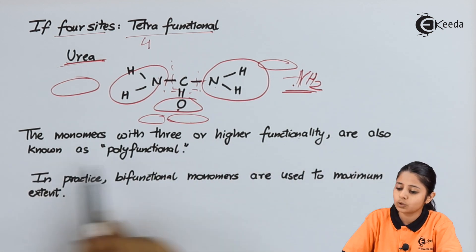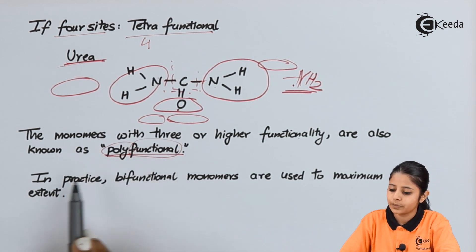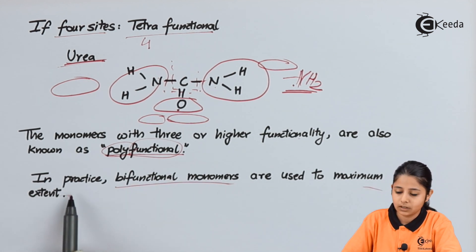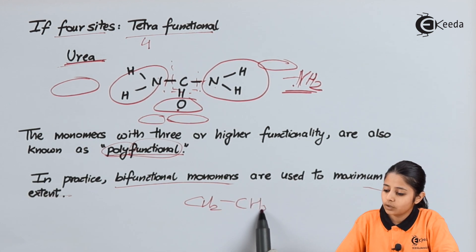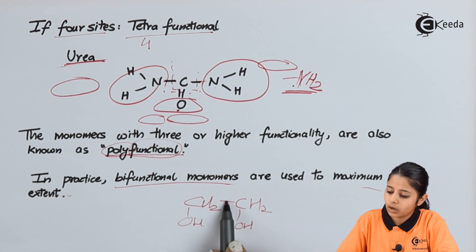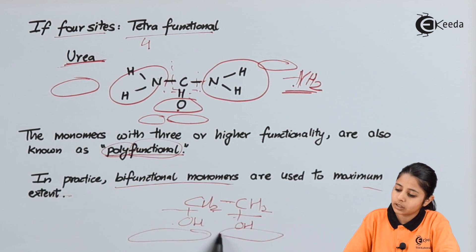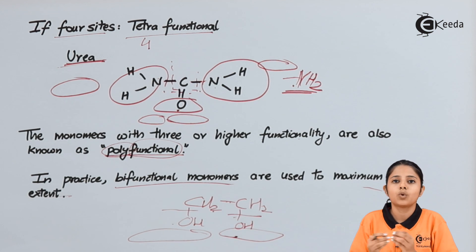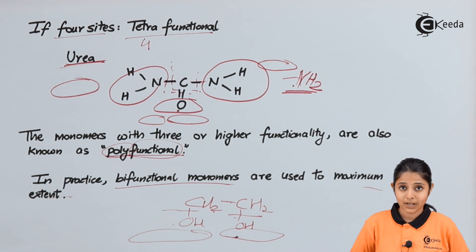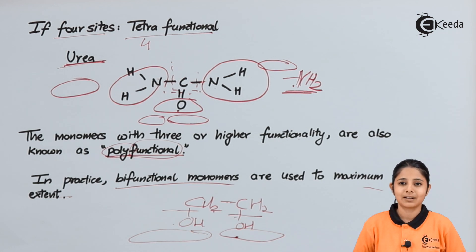Monomers with three or higher functionality are also known as polyfunctional, where poly means many. In practice, bifunctional monomers are used to the maximum extent, as they allow polymers to form long chains. In today's session we studied polymerization, monomers, polymers, and the features needed to convert monomers into polymers. Thank you for watching — stay tuned to Ikila and subscribe.